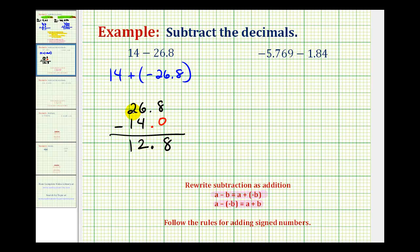Because the larger absolute value is 26.8, which came from the negative 26.8, this actual sum, which is the same as this difference, is negative 12.8. This should make sense that it's negative because this negative 26.8 is outweighing the positive 14.